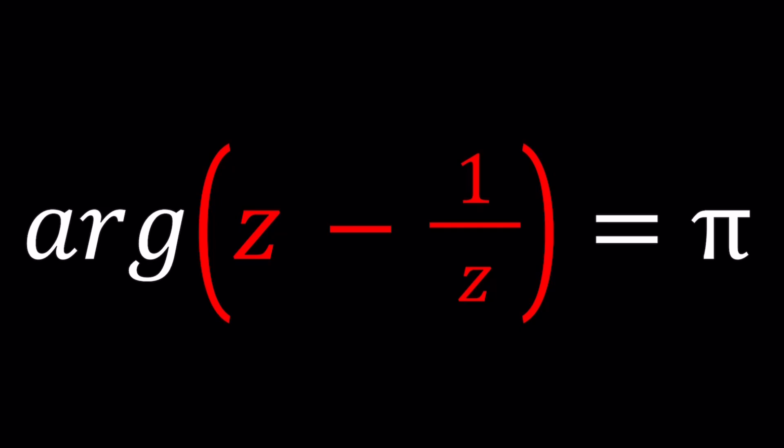So we have ARG, which stands for the argument of Z minus 1 over Z, and that happens to be pi. What is that supposed to mean? I'll show you two methods and let's start with the first one.